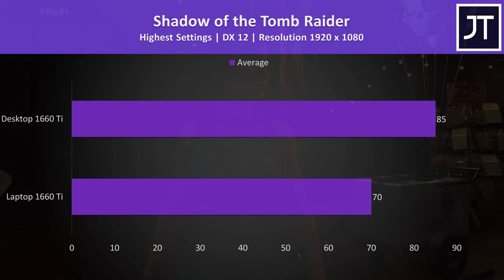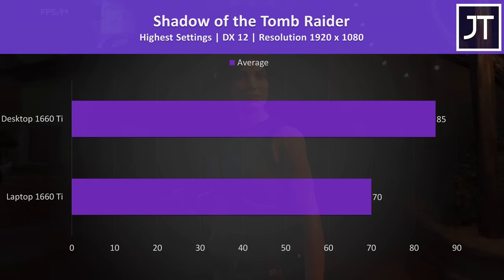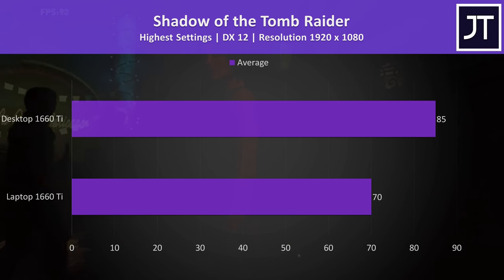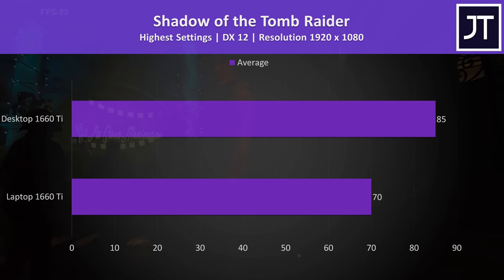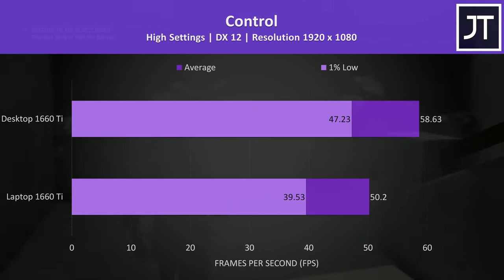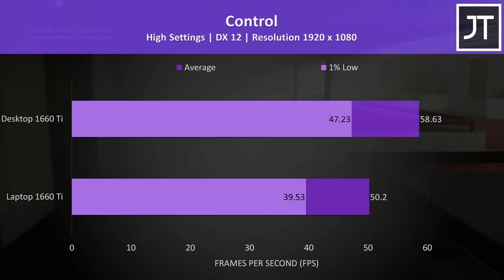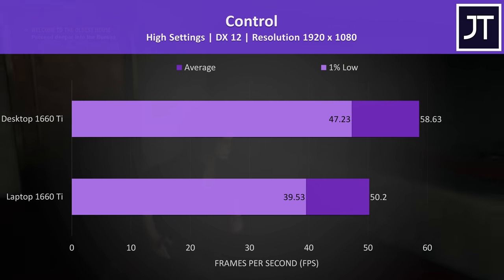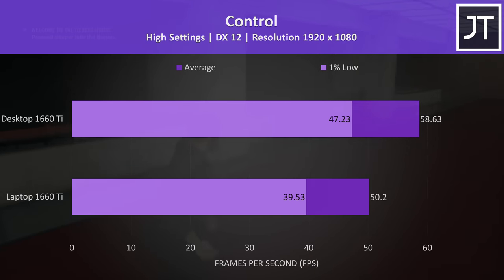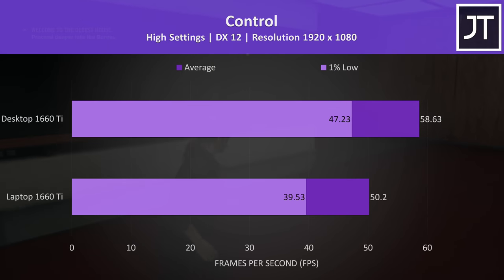Shadow of the Tomb Raider was tested with the built-in benchmark, and this was another above-average result for the desktop graphics, which was 21% faster than the laptop. Control was tested by walking through the same section of the game on both machines, and there was a smaller 17% higher average frame rate from the desktop — smaller than the other games but still a fair improvement.